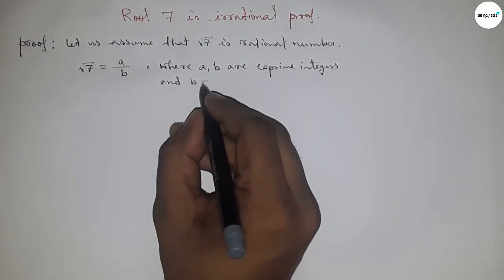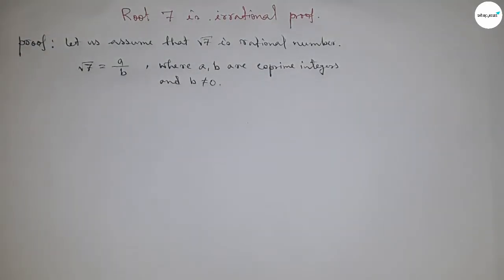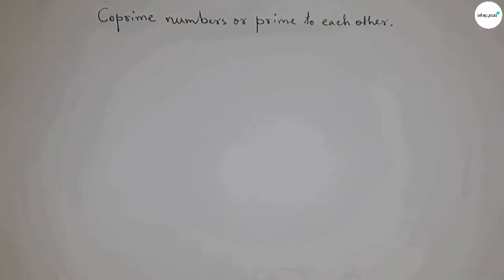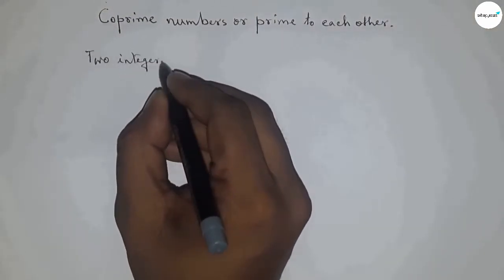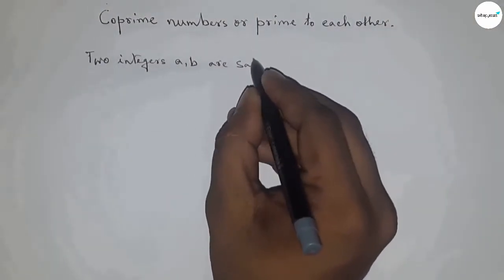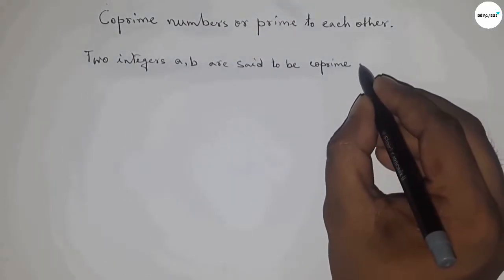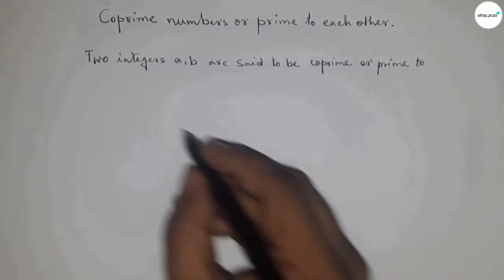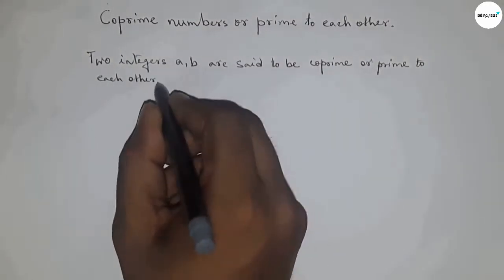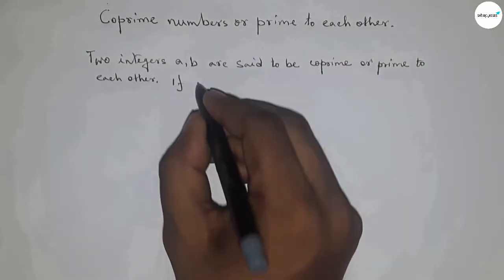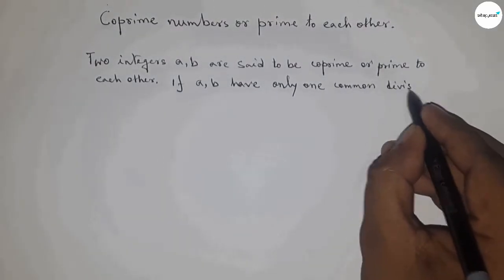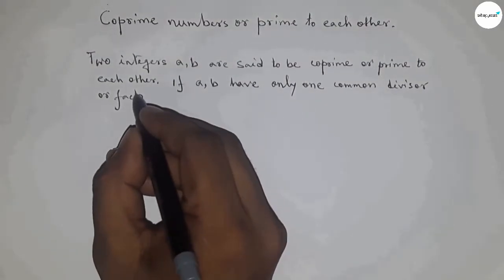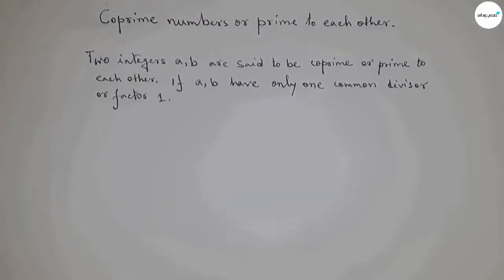And b is never equal to 0. What is co-prime, or prime to each other? Two integers a and b are said to be co-prime or prime to each other if they have only one common divisor, which is 1.